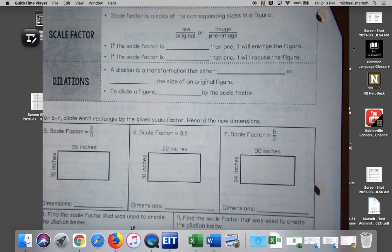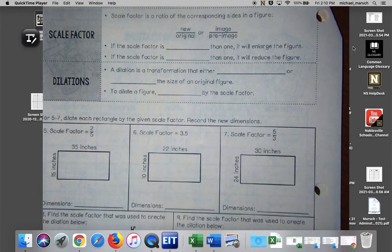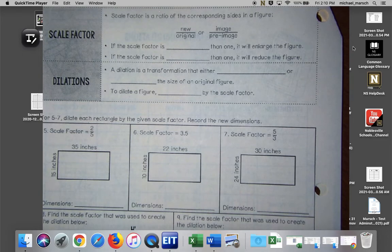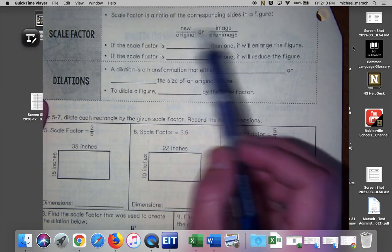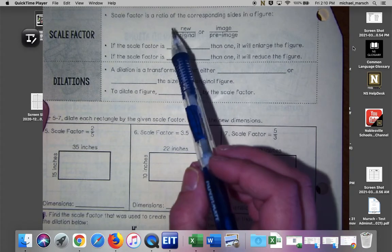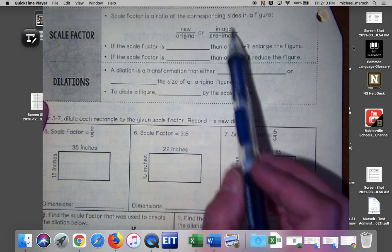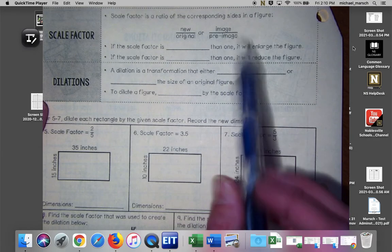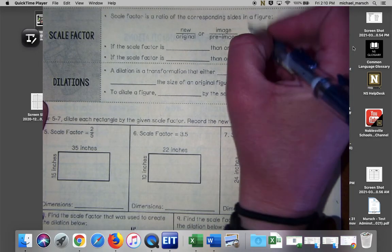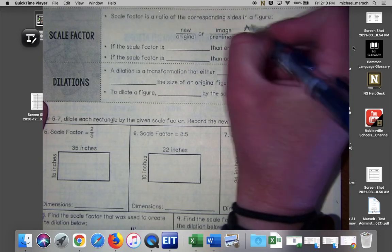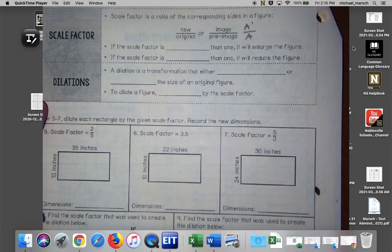We're going to do some more fill in the blanks. Scale factor is a ratio of the corresponding size of a figure so we have the new divided by the original, or you could say image divided by pre-image, so that would be like a prime divided by a.